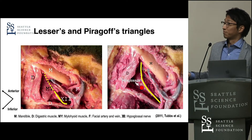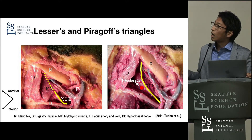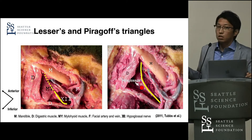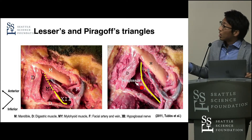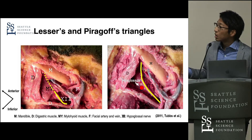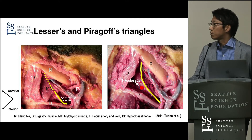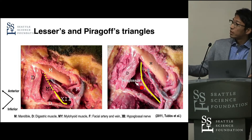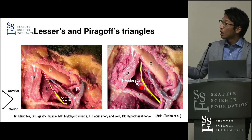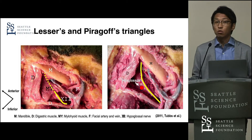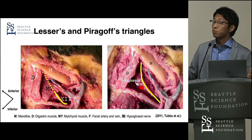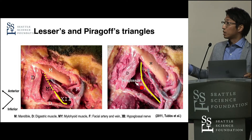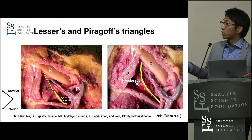This is a great picture. The left one is before removing the mylohyoid, and the right one is after removing the mylohyoid. Both pictures are after removing the submandibular glands and some tissues. M is the mandible, D is the digastric muscle, MY is the mylohyoid, F is the facial artery and facial vein, and 12 is the hypoglossal nerve. Usually the hypoglossal nerve passes beneath the mylohyoid and goes into the tongue. After removing the mylohyoid, you can see the hypoglossal nerve and the hyoglossus muscle clearly. The lingual artery exists in the deep layer under the hyoglossus muscle.